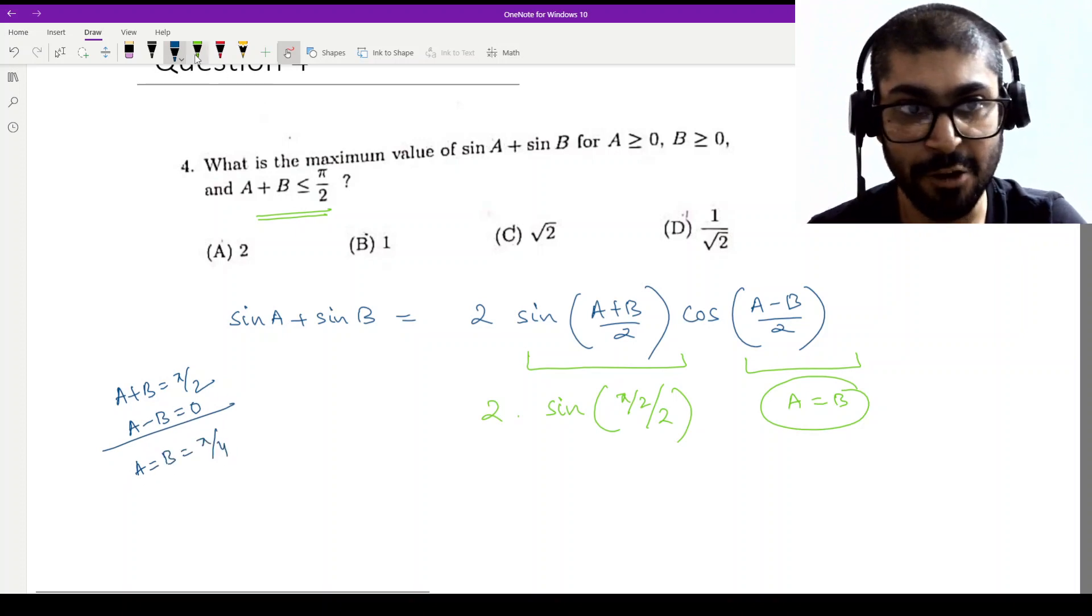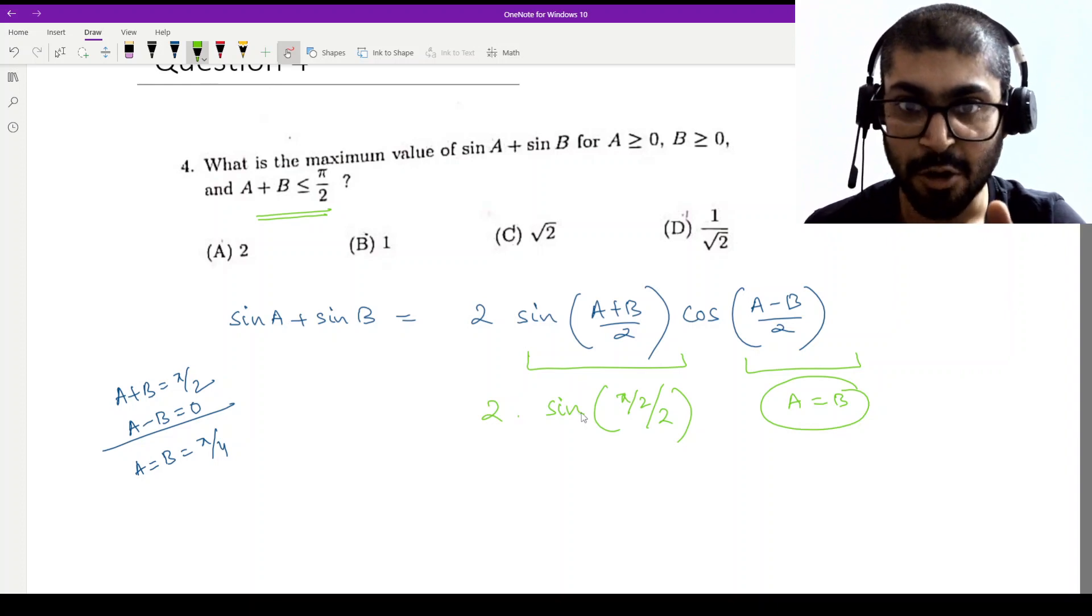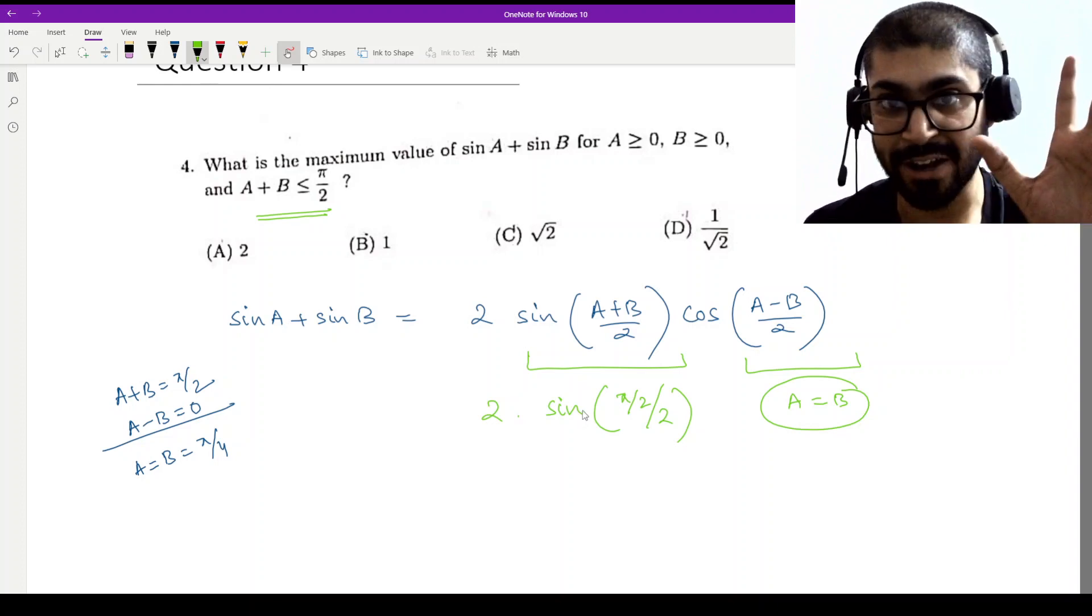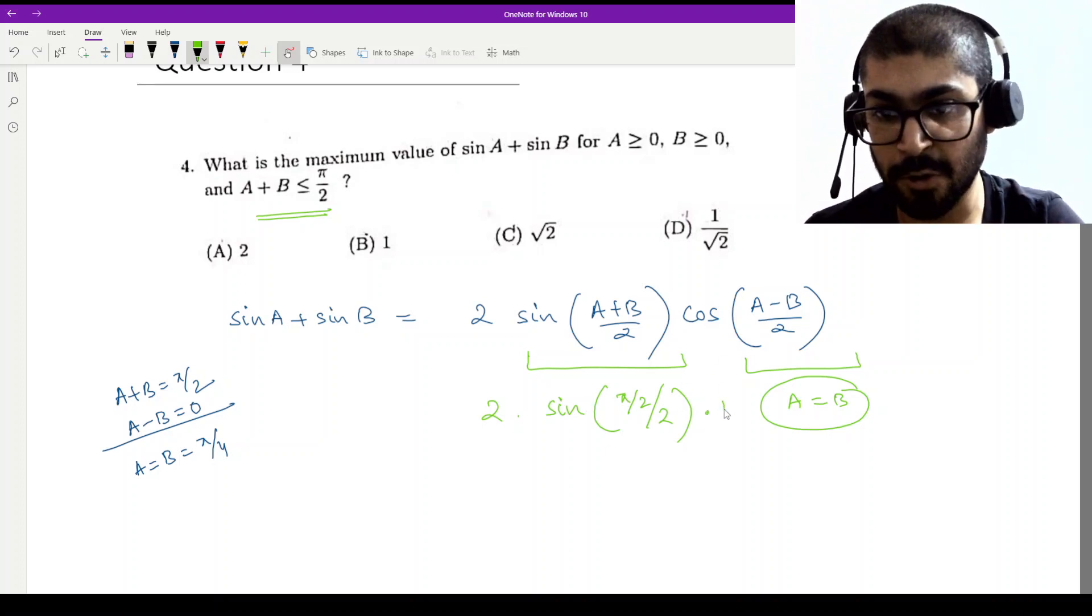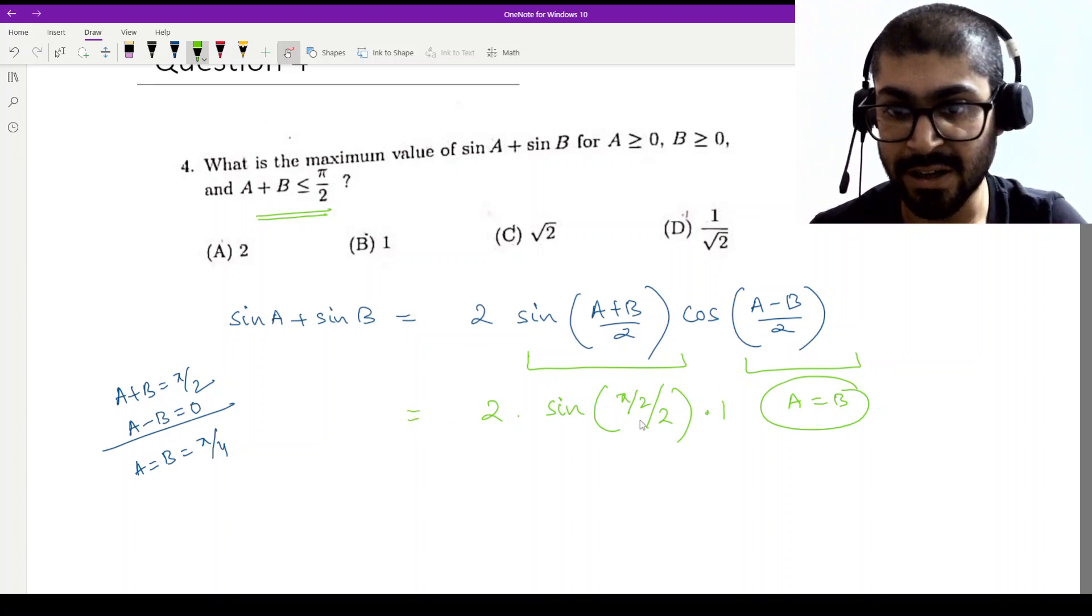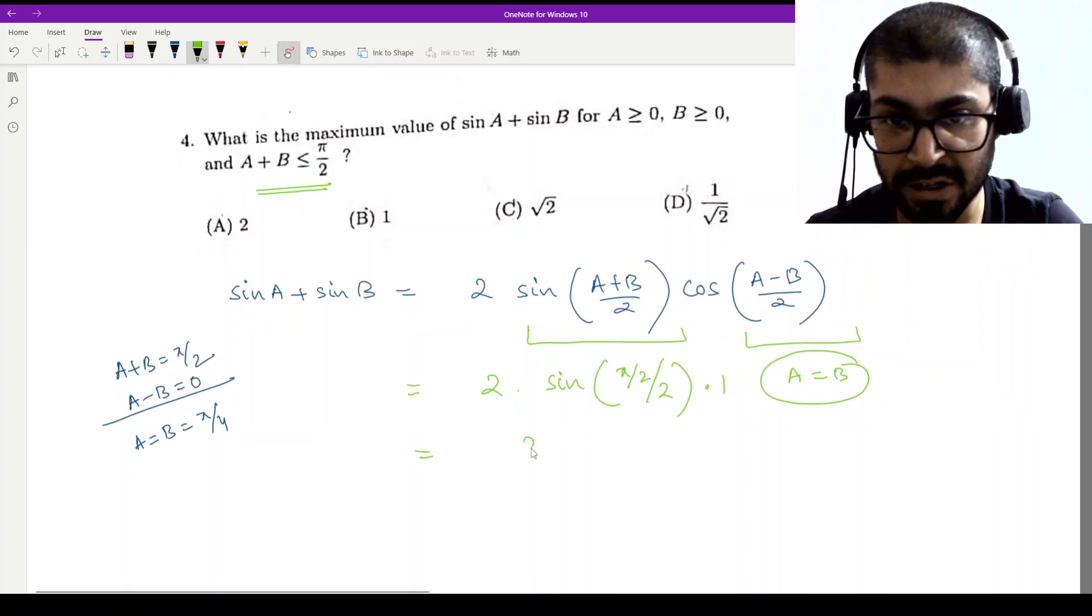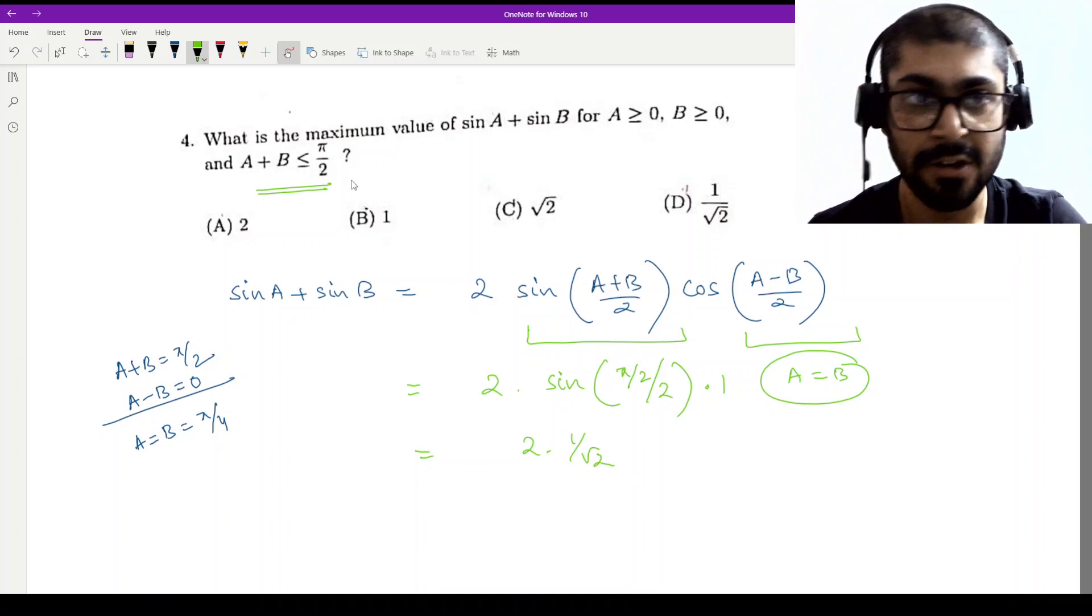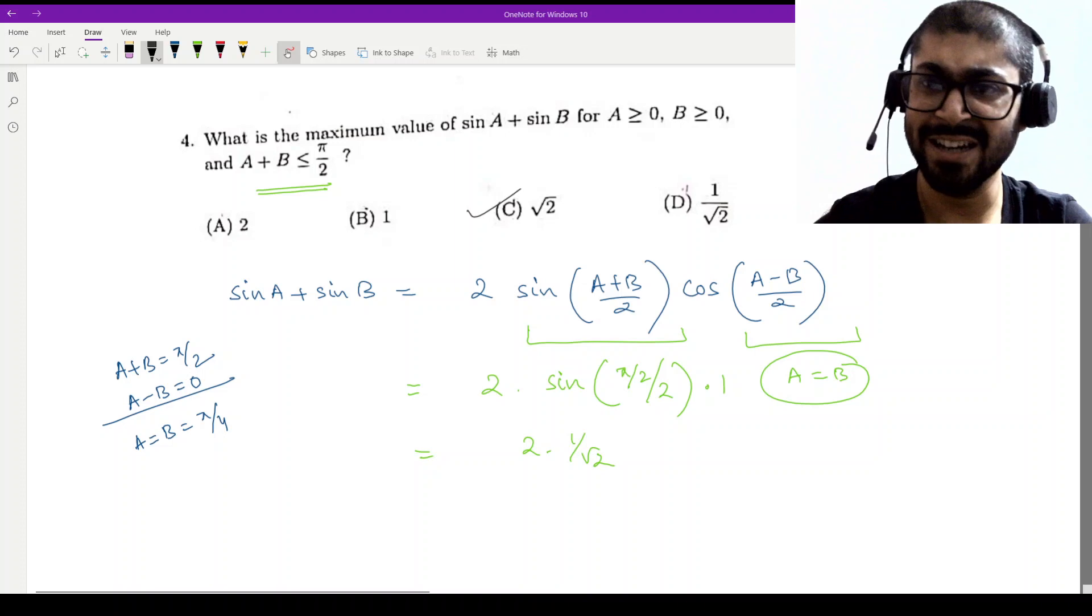This means that at this exact middle value, this term will be maximum. But at which point has he asked? He has asked the maximum value. What will it be? So when A equals B, cos is 1. So let's leave this. And what do we have written? Sin pi by 4. This means 2 into 1 by root 2. Option C, 1 by root 2. It was very easy.